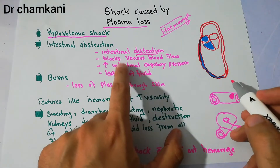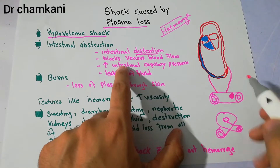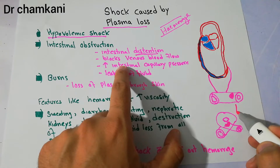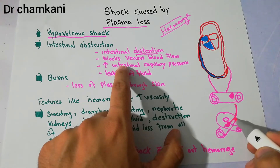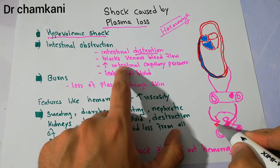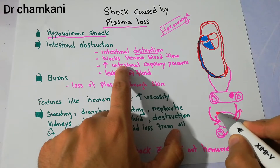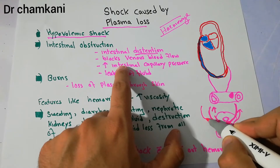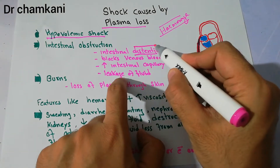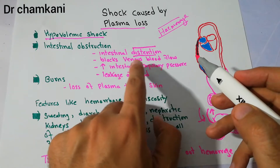The blood vessels — arterial and venous — supply the area of obstruction. Blood is coming from one side through the arteries, but the distension in the intestine basically blocks the venous blood flow. Blood cannot go back, so it starts pooling and pressure starts building up.